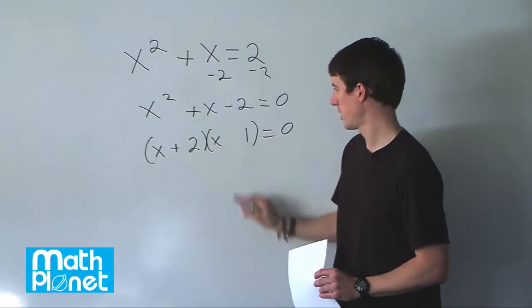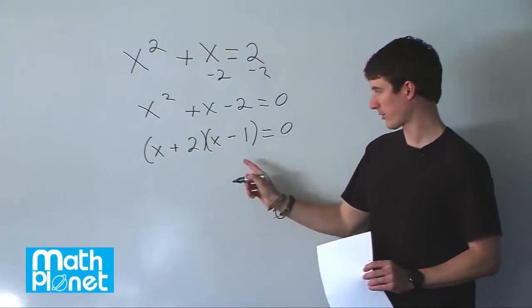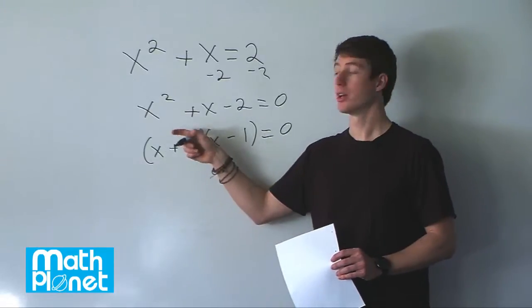So we have x plus two and x minus one, and of course if you multiply and expand this back out you'd get this again.